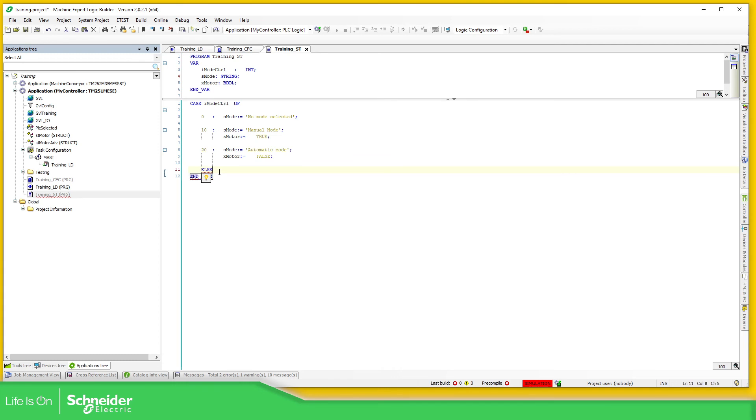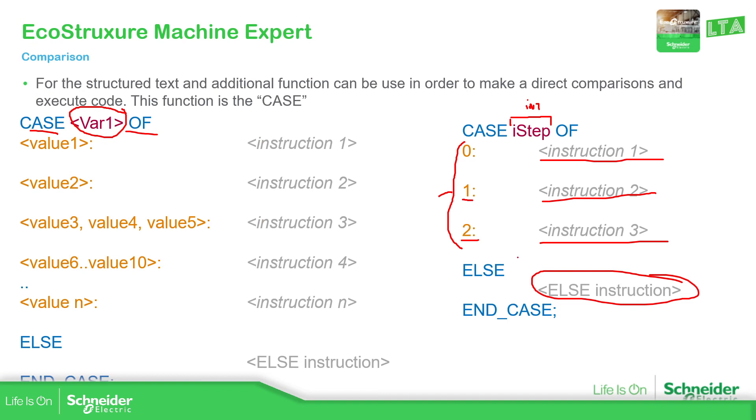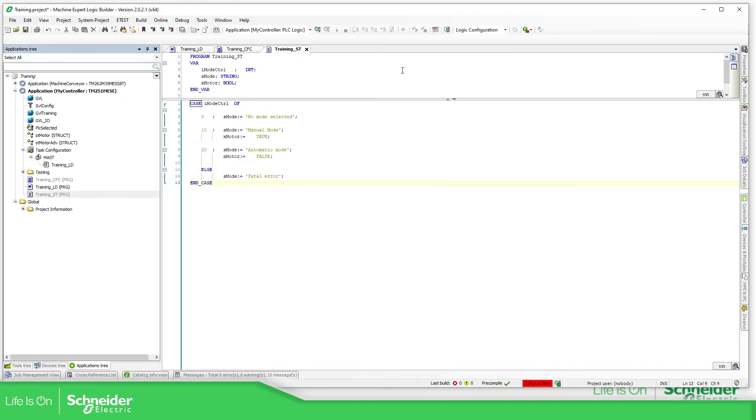Else. Else. It's going to be, like, fatal error. I think this is a syntax. Let's double check. Else. Perfect. So now we need to execute this. So we need to call the ST over here in the MAST.